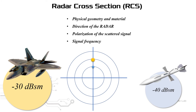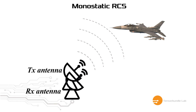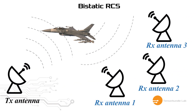RCS has two classifications. One is monostatic RCS, where the transmitter and the receiver antenna are located at the same place. Then we have bistatic RCS, where we have several receiver antennas located at different positions, and we also have a transmitter antenna located at a different position.